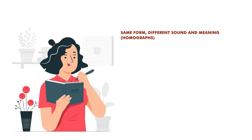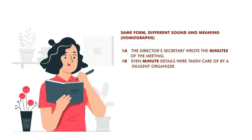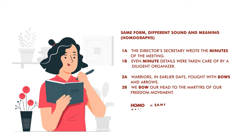Then you have homographs — same form, different sound and meaning. 'The director's secretary wrote the minutes of the meeting' versus 'Even minute details were taken care of by a diligent organizer.' 'Warriors in earlier days fought with bows and arrows' versus 'We bow our head to the martyrs of our freedom movement.' The spelling in both sets of sentences is the same, but the pronunciation is different — 'minutes' and 'minute,' 'bows' and 'bow.'